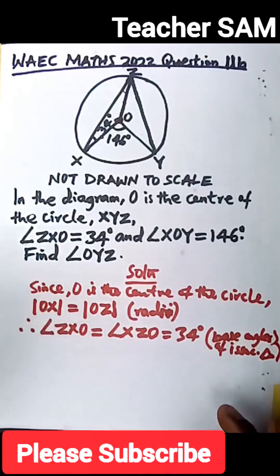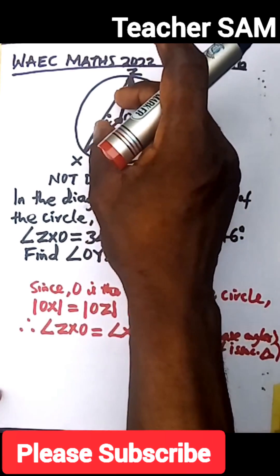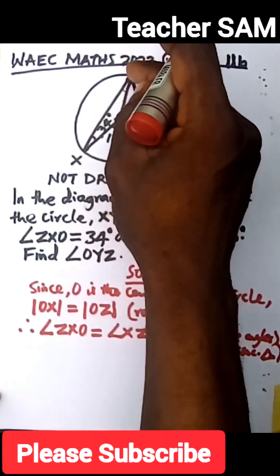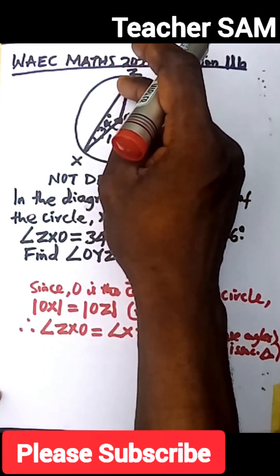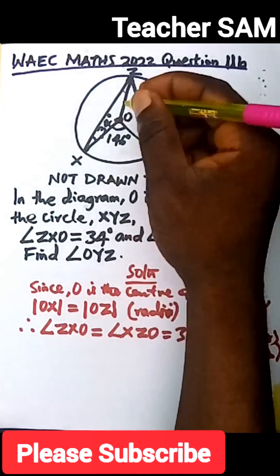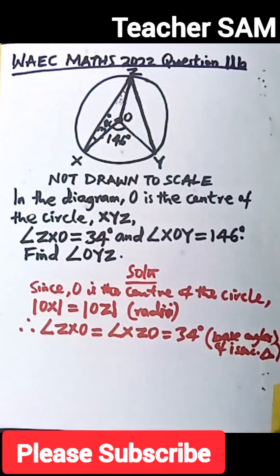Considering triangle XOZ in this circle, since OX equals OZ, the base angles are equal. So we have established that angle XZO is also 34 degrees.